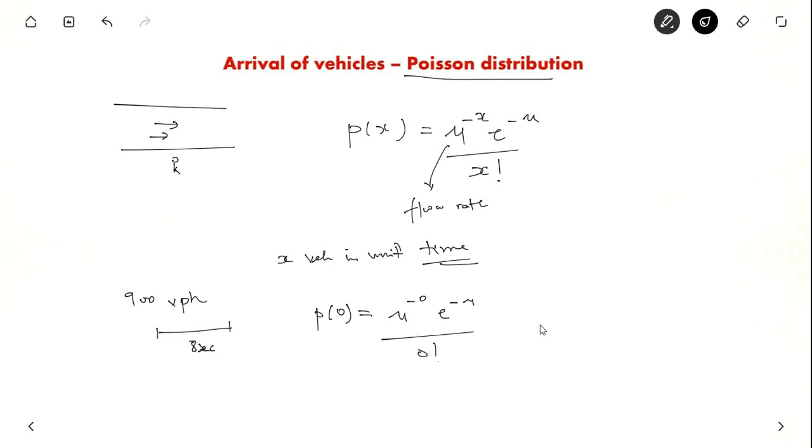0 factorial is 1. This is also 1 equal to e power minus nu. So we need the flow rate for every 8 seconds. So it is 900 vehicles per hour. 900 into 8 divided by 3600 that is 2 vehicles per second. So nu is equal to 2. So nu is equal to e power minus 2. I think that is 0.135. So this is the probability that you will observe no vehicles with a gap of 8 seconds.